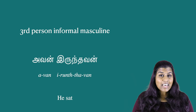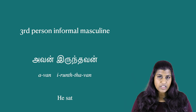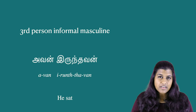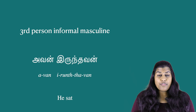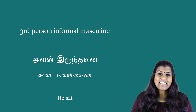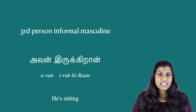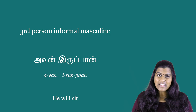Next up is the informal 'he' — third person but informal. This is for younger brothers, best friends, boyfriend, or husband. Avan irundavan. Avan irukkiran. Avan irpan.